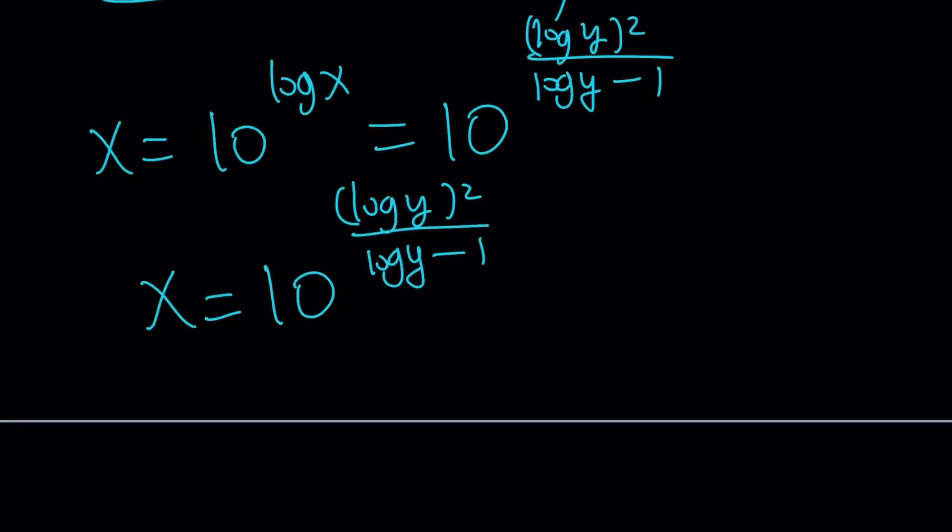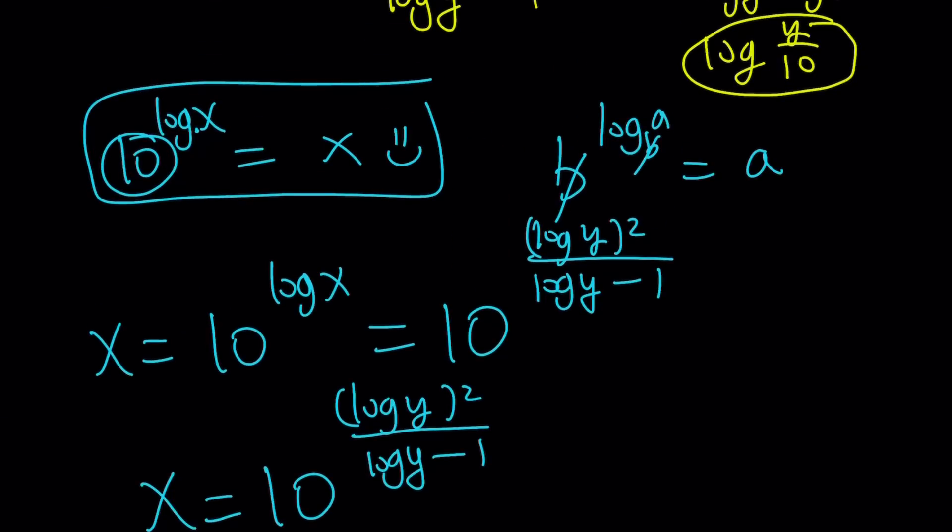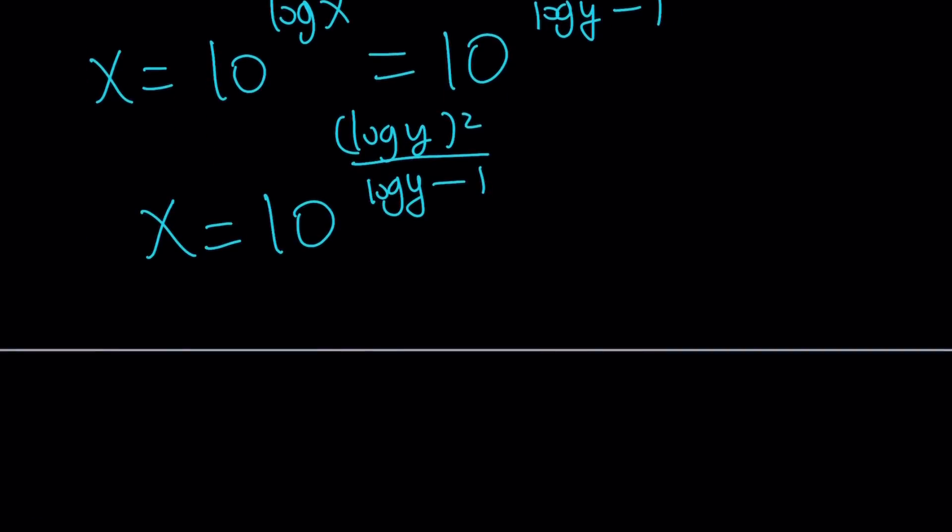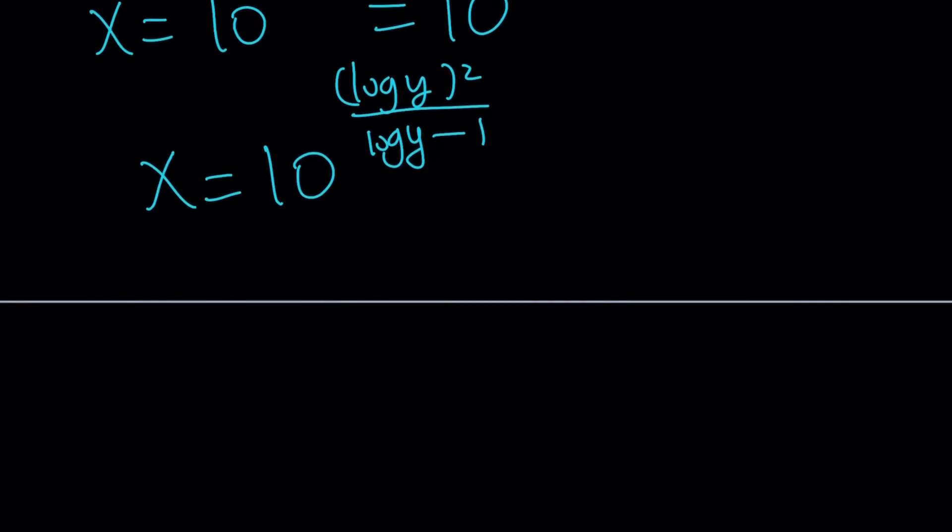But not so awesome because we can simplify this a little bit. Why? By using the same property that we used here, 10 to the power log something equals something, we have that with y here. But log y is squared. So how do you simplify that? You can use properties of exponents again, and properties of exponents and logs are so useful, so helpful, so nice that you should all know them if you are not already familiar with them.